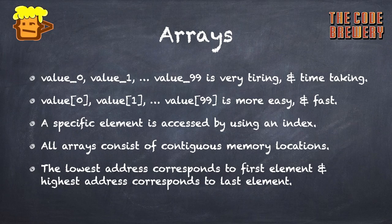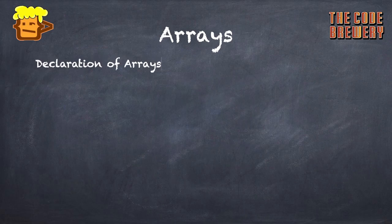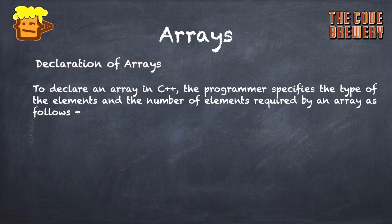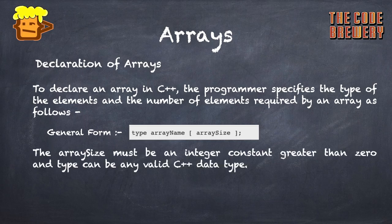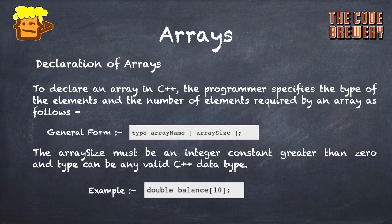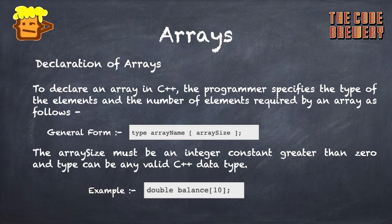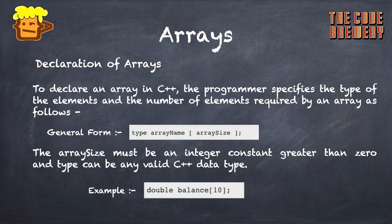To declare an array in C++, the programmer specifies the type of elements and the number of elements required. In general form, you write the type, then the array name, then the array size inside brackets. The array size must be an integer constant greater than zero, and the type can be any valid C++ data type. We start from zero in C++, so the first element is at index zero.